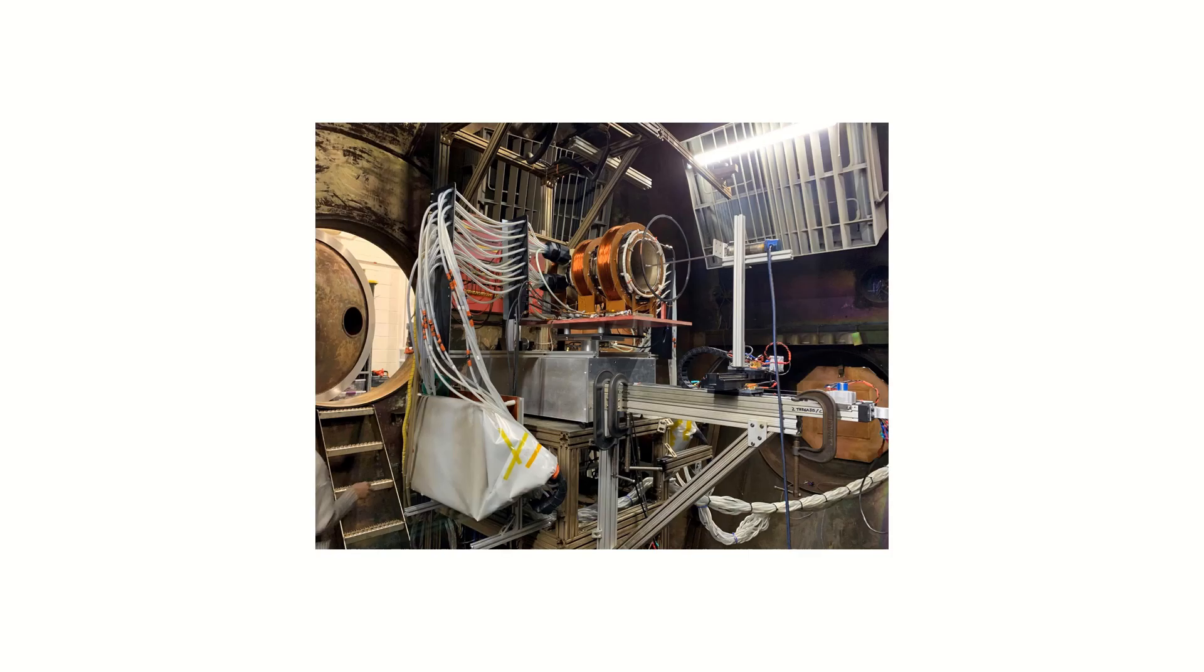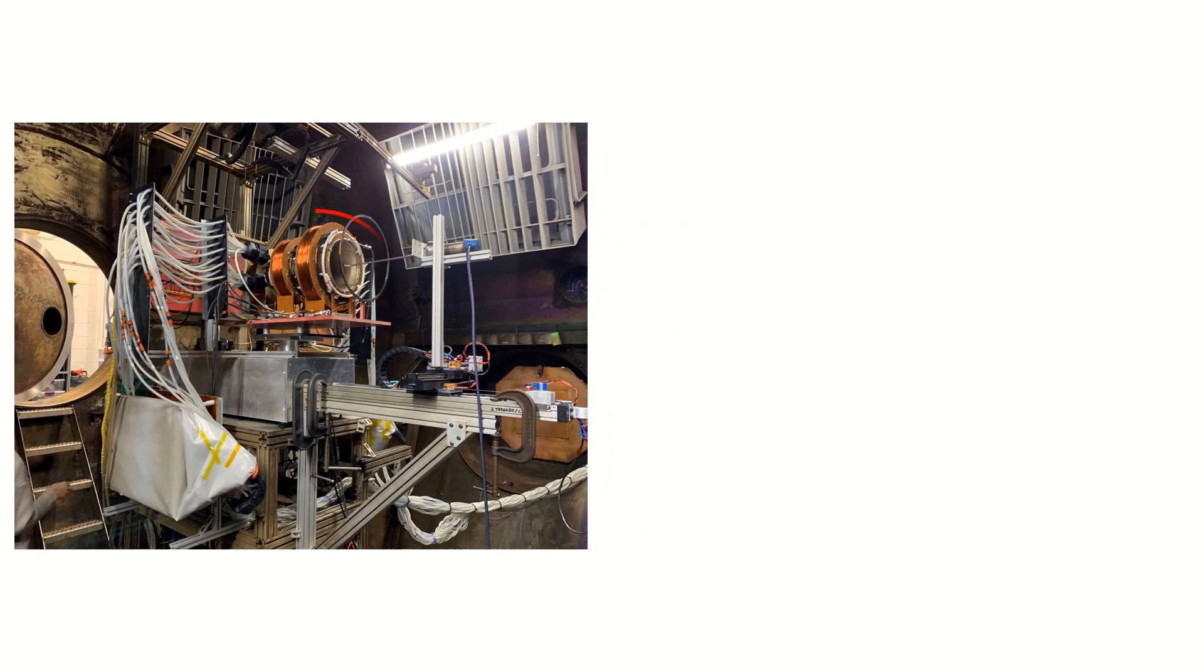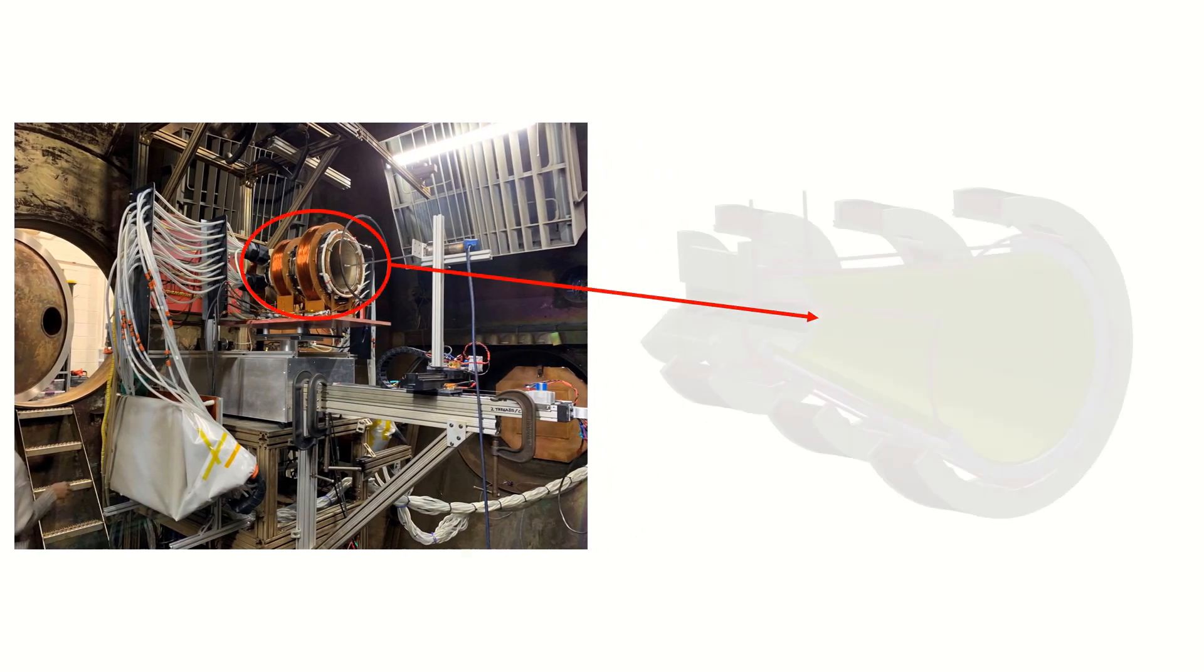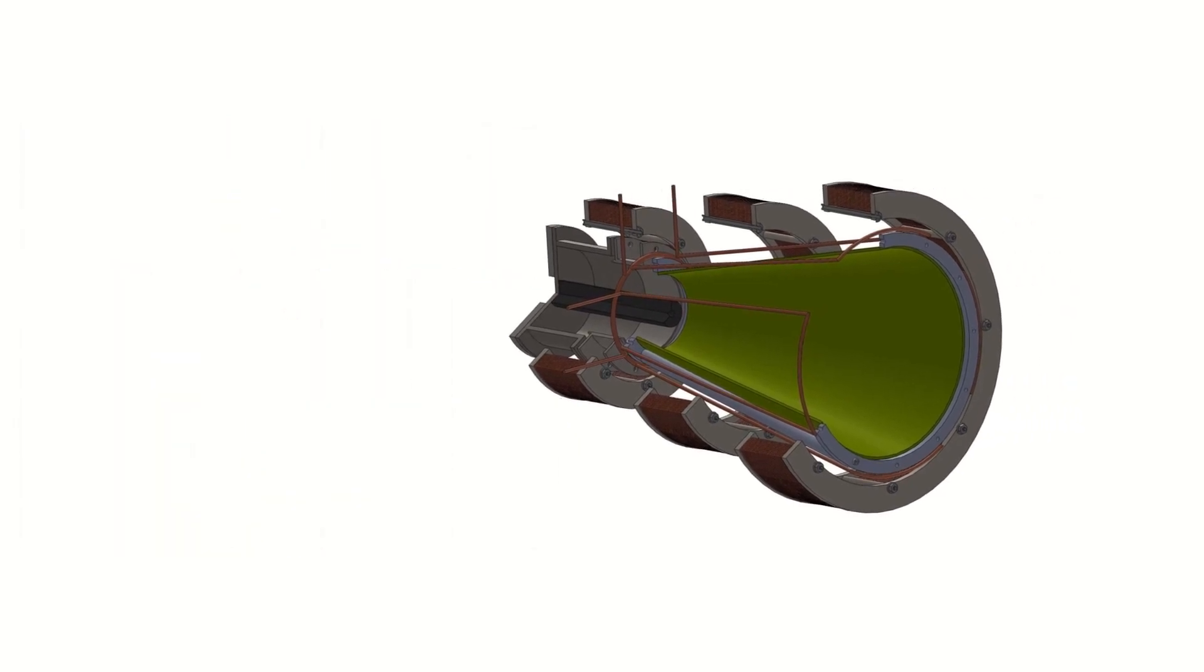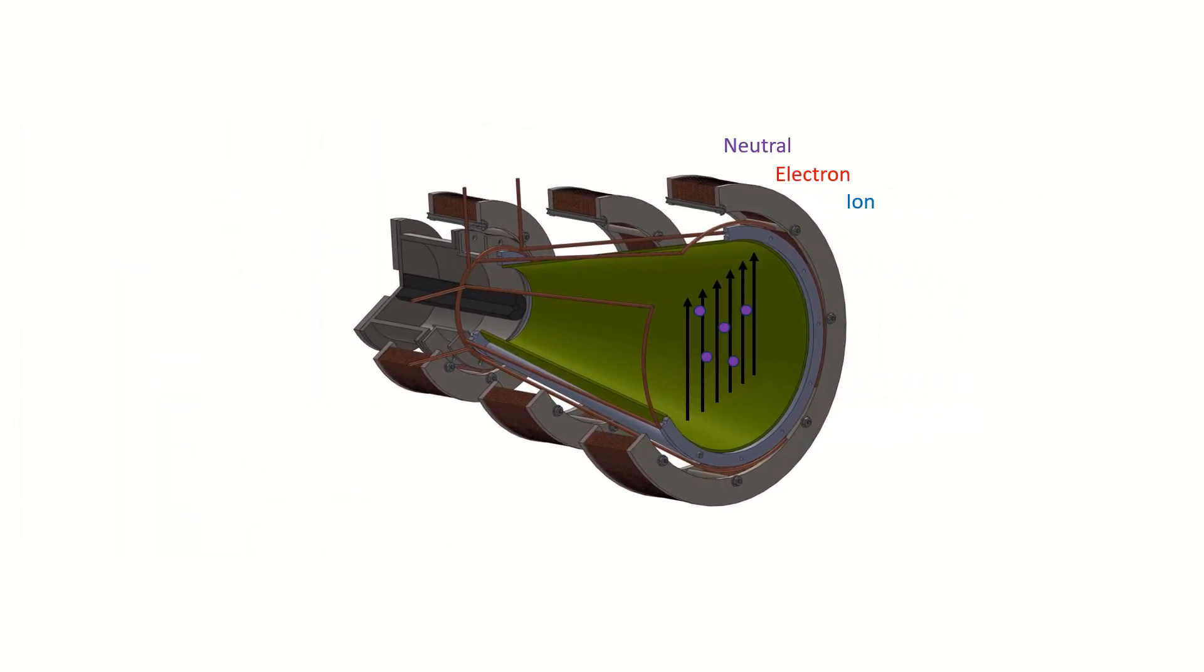First, let's establish what the thruster looks like. We can use mechanical design tools to model the structure of the device and get a good cross section for illustration purposes. The key technology here is the rotating magnetic field, which we set up inside of a cone with some neutral gas like xenon or krypton and some seed plasma.